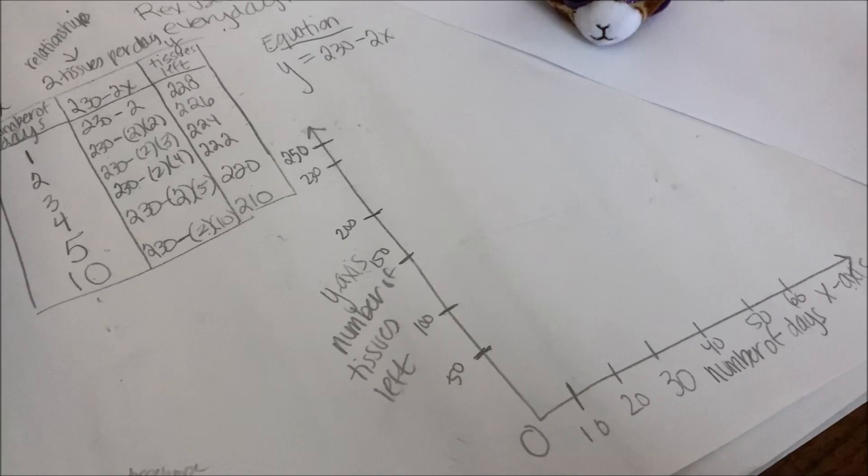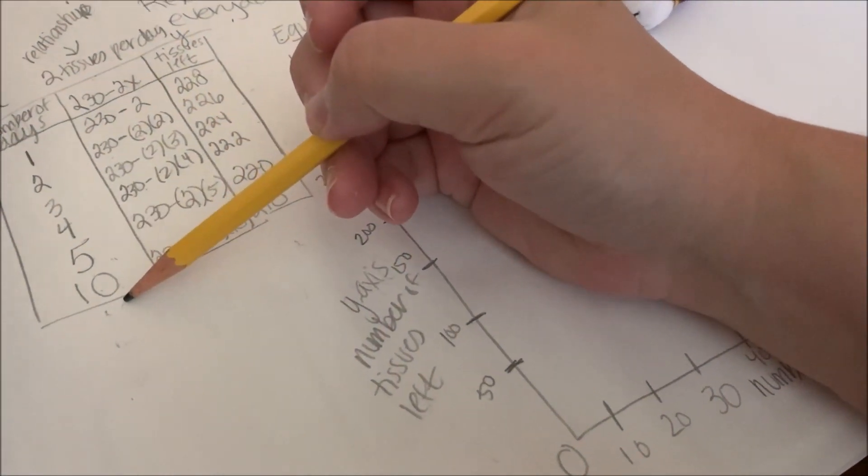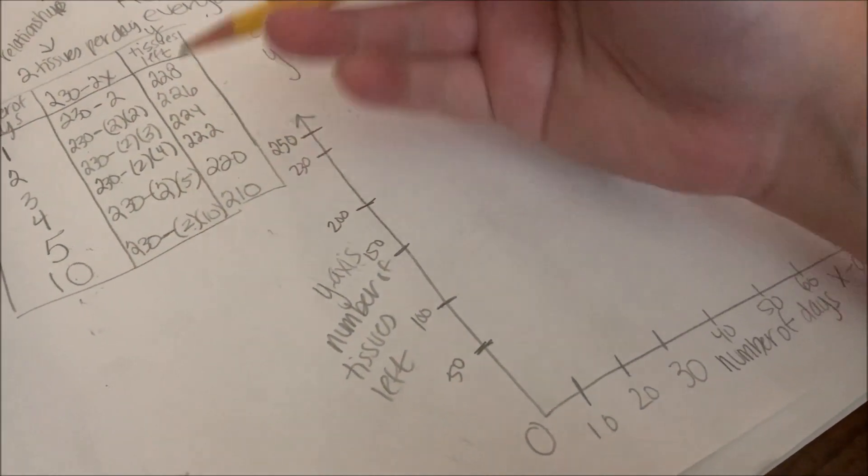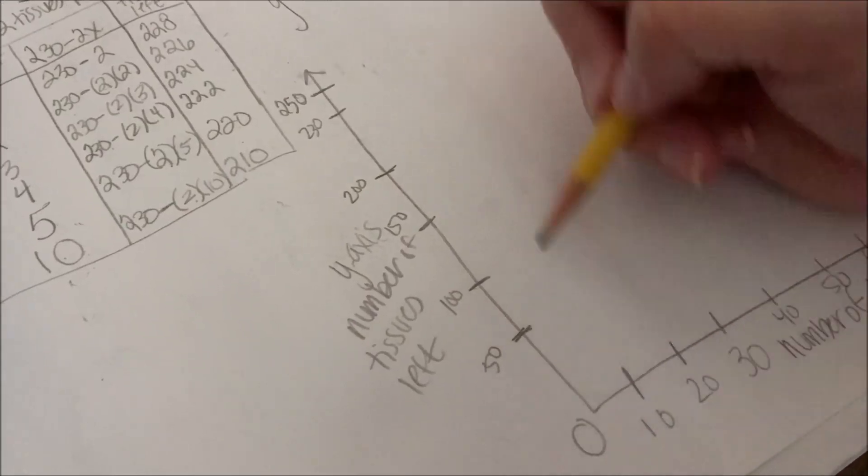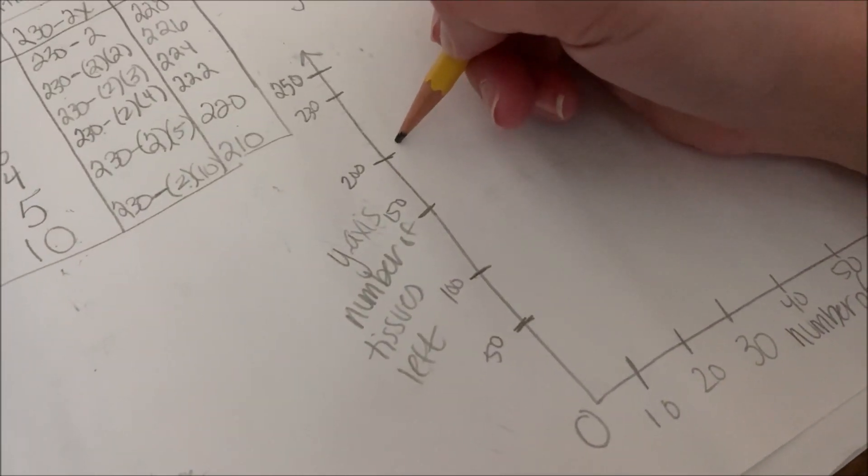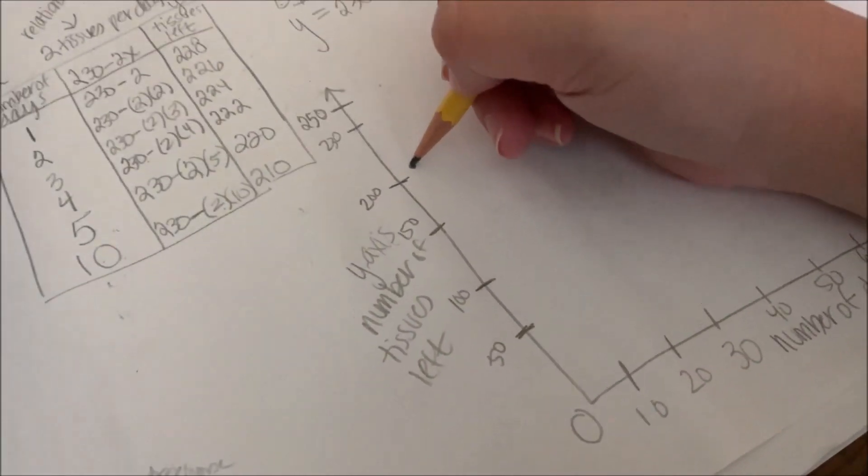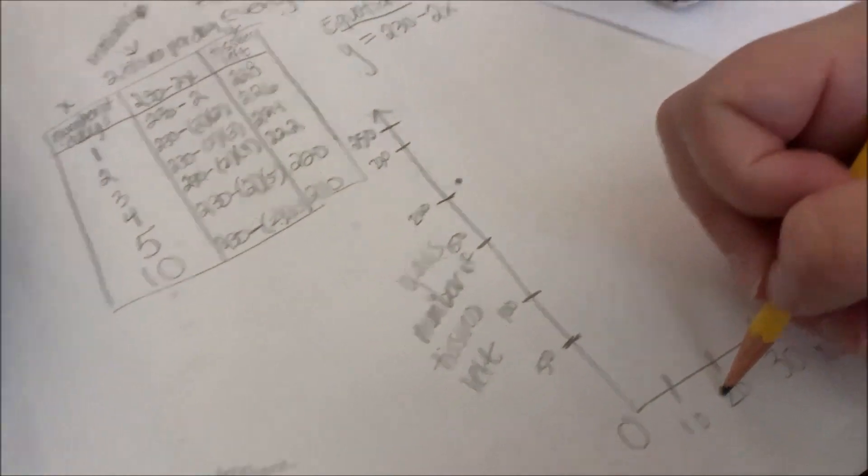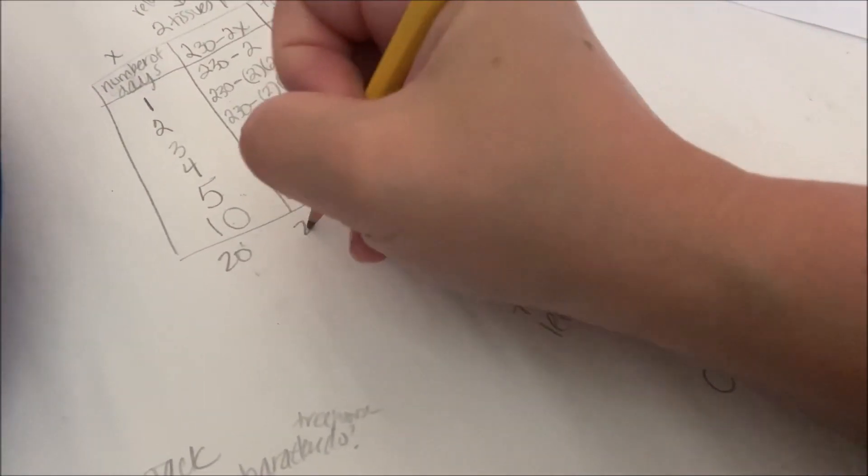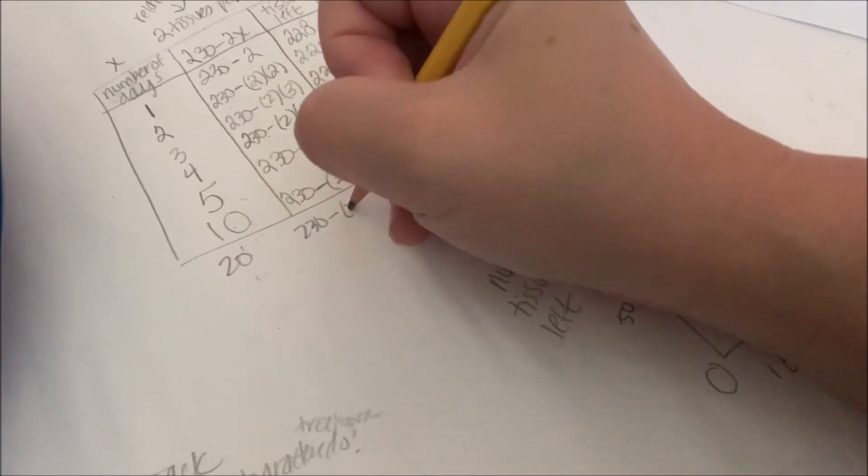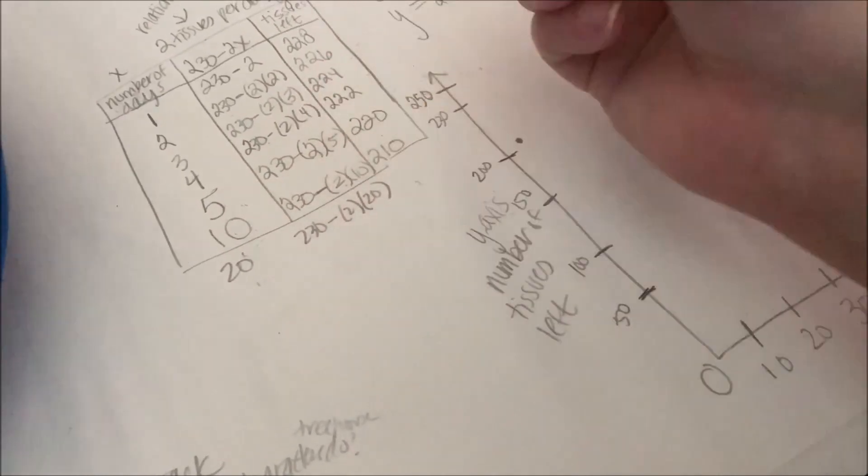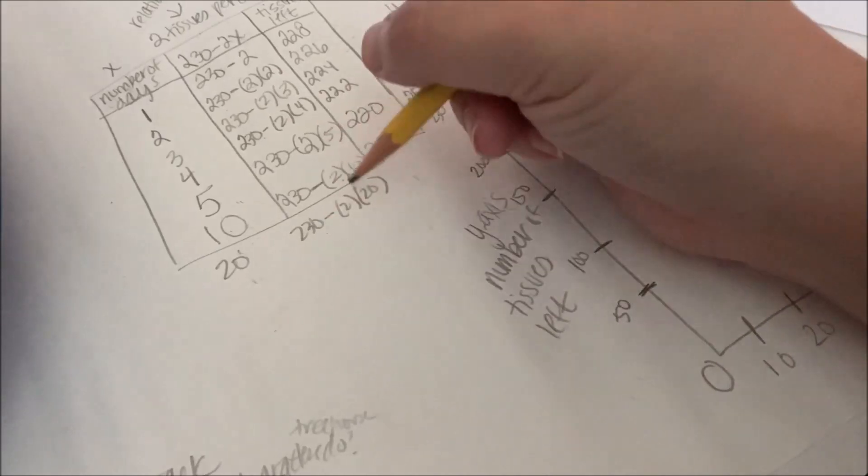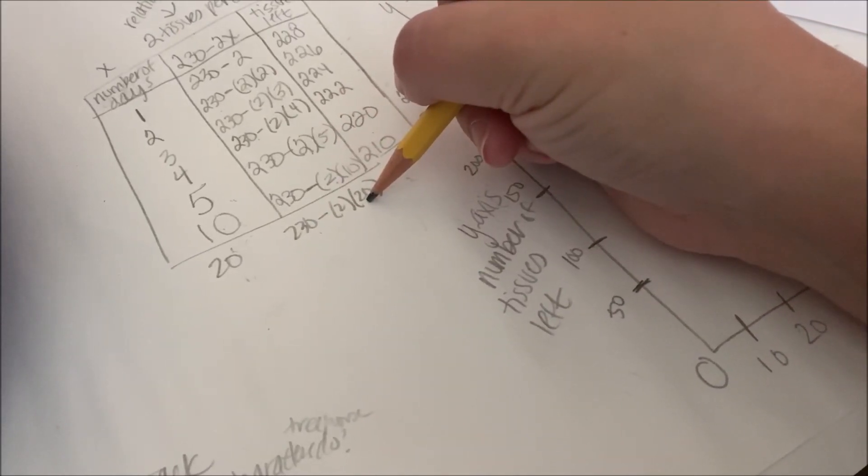Now I can start graphing some points. I know after 10 days, there are 210 tissues left. So 10 days, 210 tissues. How am I going to figure out 20 days? So 20 days: 230 minus 2 times 20. So I have 230 minus 40.